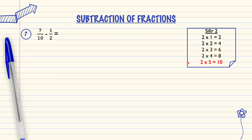In the 2 times table, there is number 10 in the answer. So this means number 2 will be multiplied by 5 to become number 10.